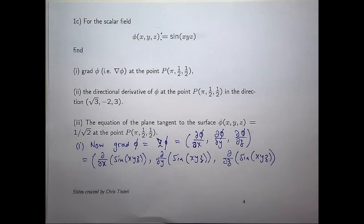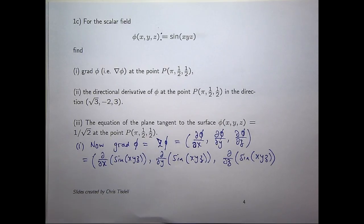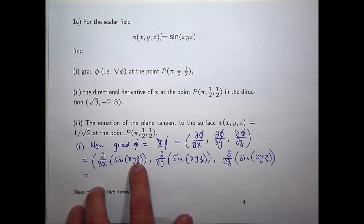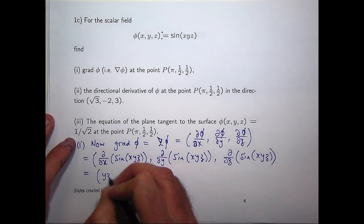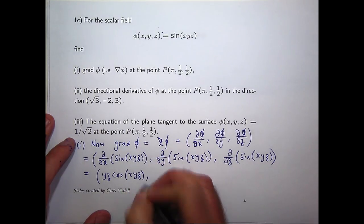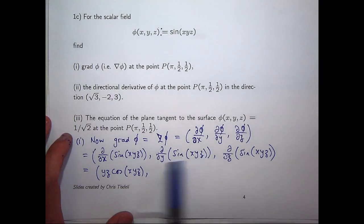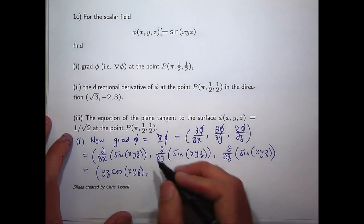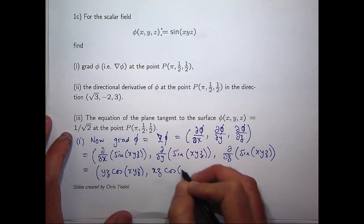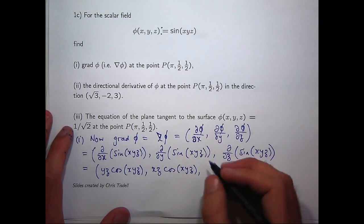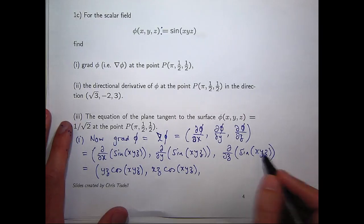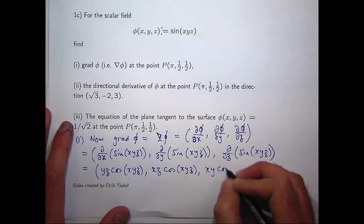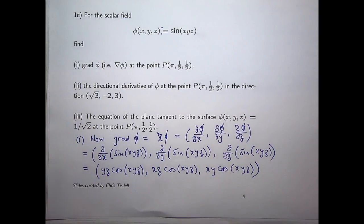Once we've calculated these derivatives, we want to evaluate them at the point P. So let's take the partial derivative of the first component function with respect to x. A sine is going to become a cosine. Y and z are imagined to be constants, so yz will come to the front. Similarly for the next one, xz will come to the front. And on the third one, differentiating with respect to z, holding x and y constant, xy will come to the front and the sine will go to a cosine.